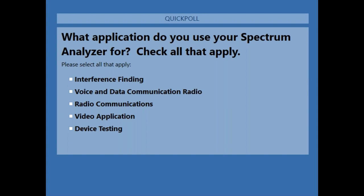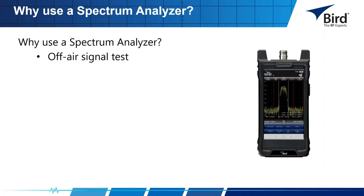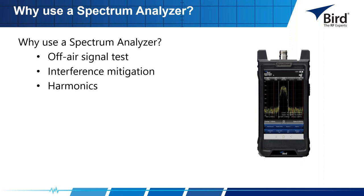The spectrum analyzer allows you to check transmitters for harmonics, look for intermodulation products, and find that rogue station that keeps stepping on your signal — all in a user-definable handheld package. These are the types of measurements and the things we use a spectrum analyzer to look for.